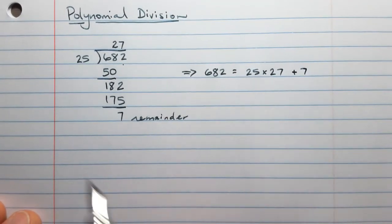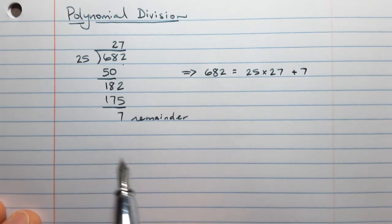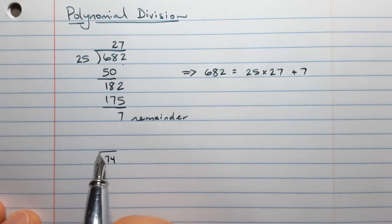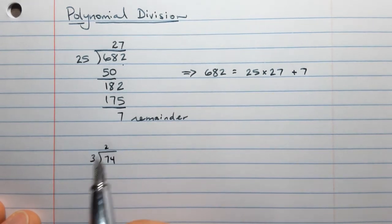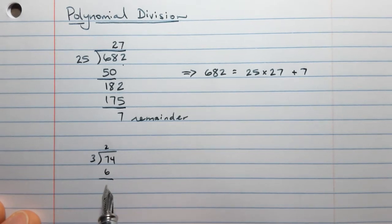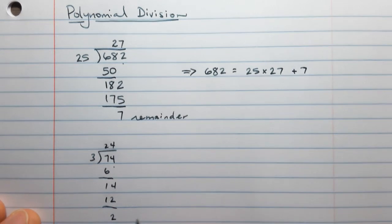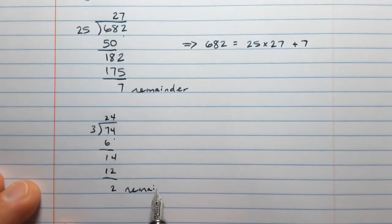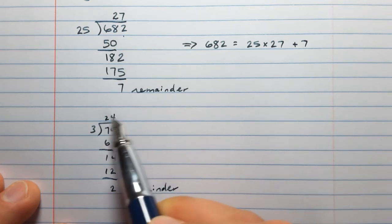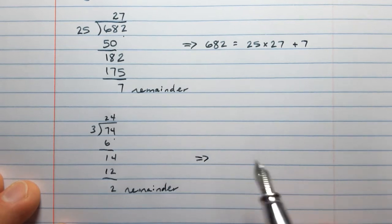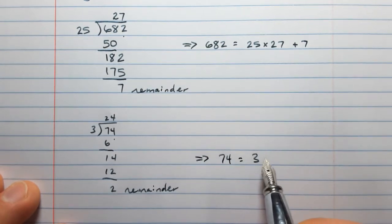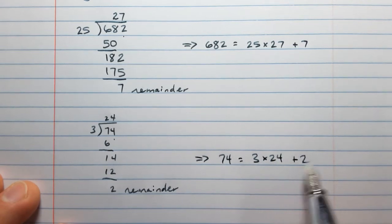Let's try doing 74 divided by 3. 3 fits nicely into 7 twice. 2 times 3 is 6. Subtracting leaves 1, bring down this 4 for 14. Now we can get 4 threes in there for 12, leaving a remainder of 2. 74 is 3 times 24 plus an extra 2.